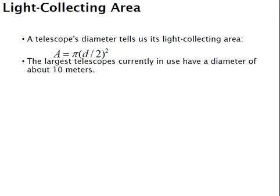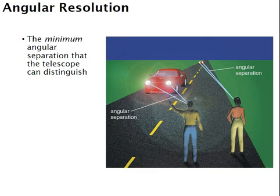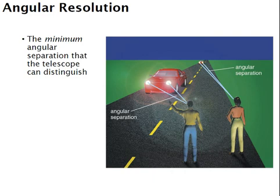The light-collecting area is pretty straightforward. We assume that the opening is circular, so the area is pi times the radius squared. On Earth, the largest telescopes we deal with are about 10 meters for visible light. Angular resolution gives you the idea of how far away can a thing be and we'd still distinguish it as two separate things — like headlights on a car driving down the road. If you can see from far enough away that they're two different headlights, then you have a larger angular resolution.